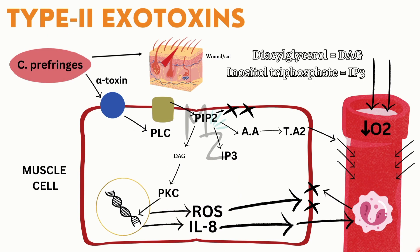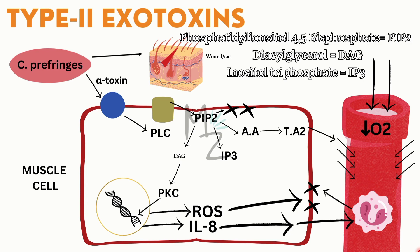For type 2 exotoxins, I've taken Clostridium perfringens, which releases alpha toxin. This bacterium can enter the body through skin cuts or wounds. Alpha toxin has receptors on various cells such as muscle cells or skin cells. It binds onto these receptors and activates a protein called Phospholipase C (PLC), which is an enzyme responsible for a key downstream pathway.